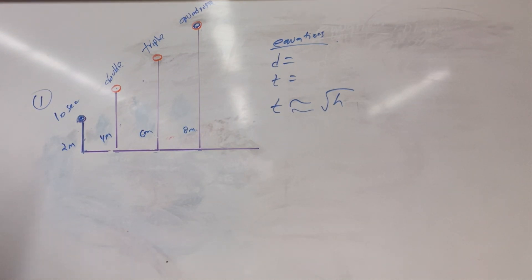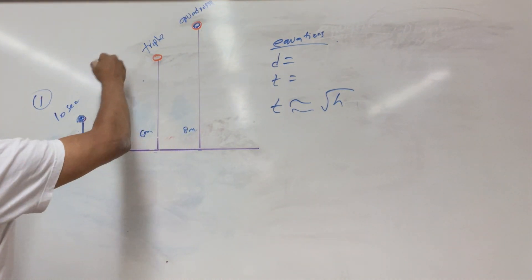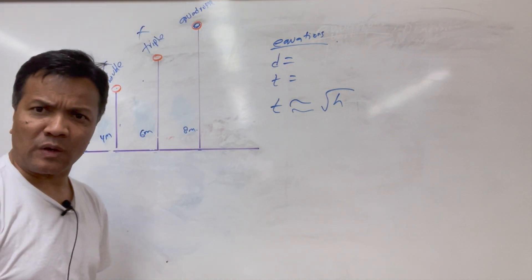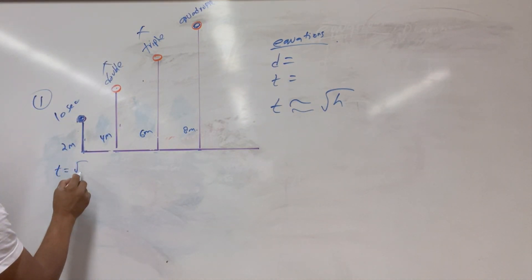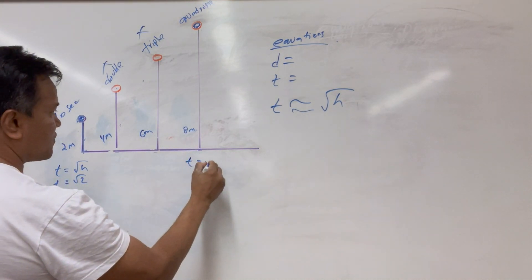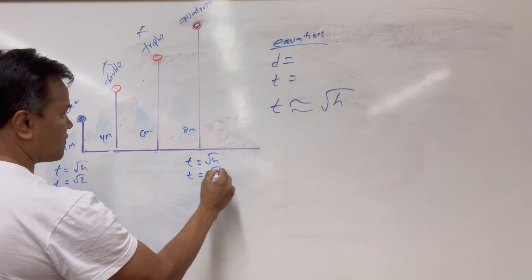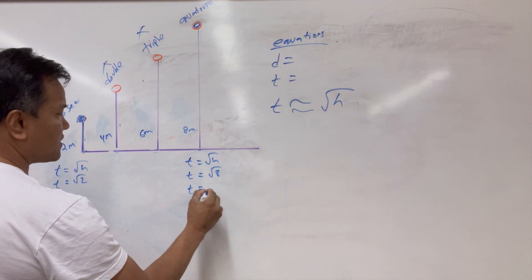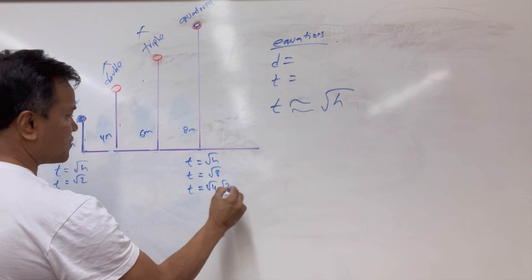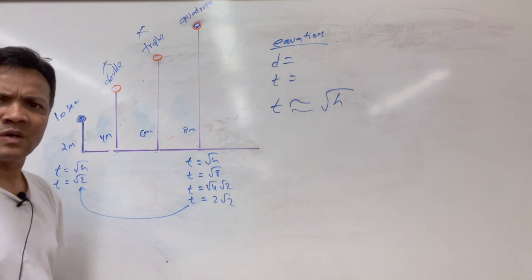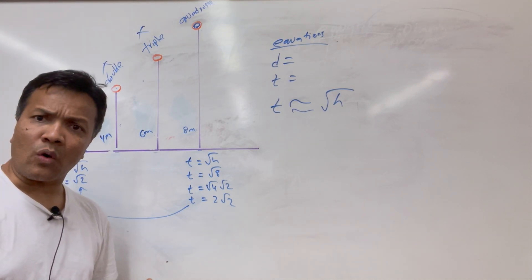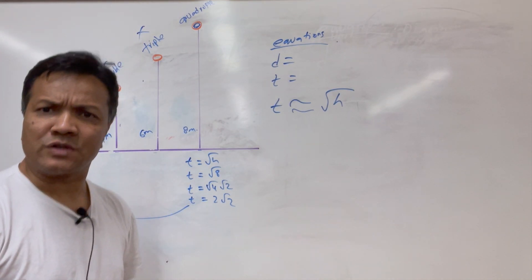The hypothesis would say not double, not even triple — quadruple. Let's figure it out: time is the square root of h, so time is the square root of 2. For height 8, time is the square root of 8, which equals the square root of 4 times the square root of 2 — so 2 times the square root of 2. That's double. So you have to quadruple the height to double the falling time.